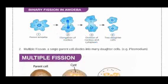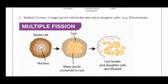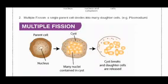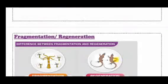Next is multiple fission. In binary fission, a parent cell divides into two. In multiple fission, a parent cell divides into many daughter cells. The nucleus of the parent cell divides into multiple cells, producing many new organisms at once.